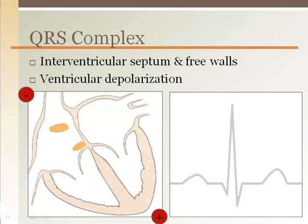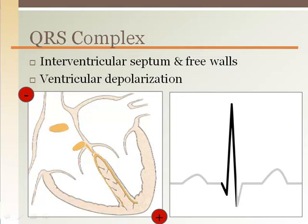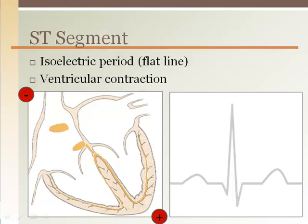The QRS complex is a whole bunch of events bundled together. In general, the depolarizing impulse as it travels through the bundle of His and the right and left bundle branches is parallel to the recording electrodes in lead 2, so the waveform will be positive. Once the impulse gets to the apex, it then moves out, around, and back up the ventricular free walls.